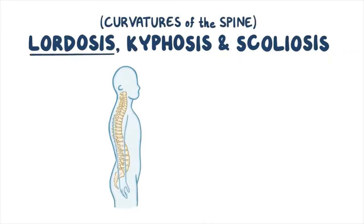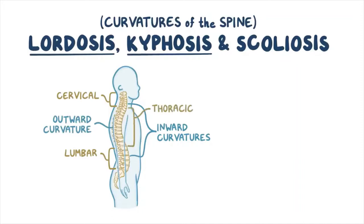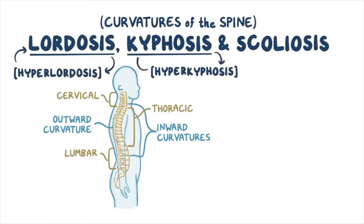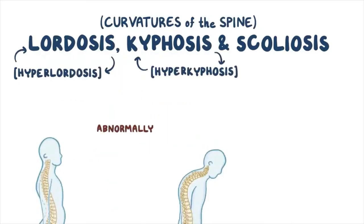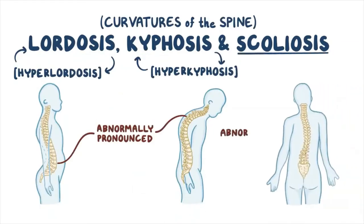Lordosis refers to the normal inward curvatures at the cervical and lumbar regions, while kyphosis refers to the normal outward curvature at the thoracic region. These terms are often used interchangeably with hyperlordosis and hyperkyphosis, meaning the curves look abnormally pronounced. Finally, scoliosis always refers to abnormal sideways curvatures of the spine.